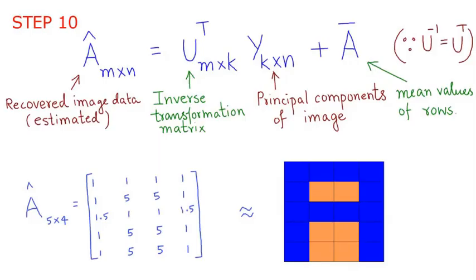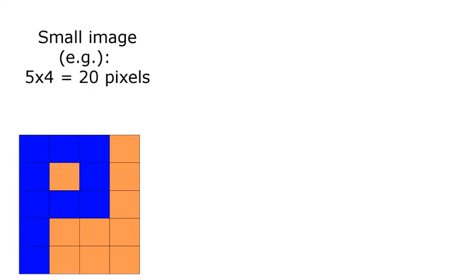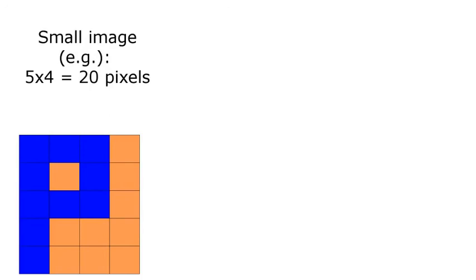Now instead of sending the entire image data, we send only the matrices with the principal components, transformation and mean values using which we can recover the original image data at the receiver. This may seem unnecessary for a small image, but for a typical image of a very large size, this algorithm can save memory and energy.